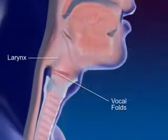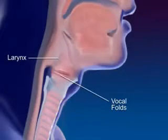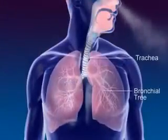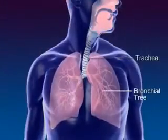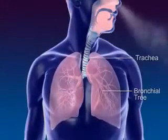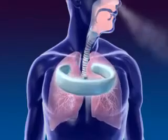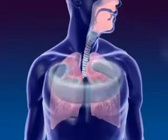The larynx, or voice box, contains the vocal folds. The trachea, or windpipe, connects the larynx to the bronchial tree. The cartilage rings of the trachea prevent the trachea from collapsing.